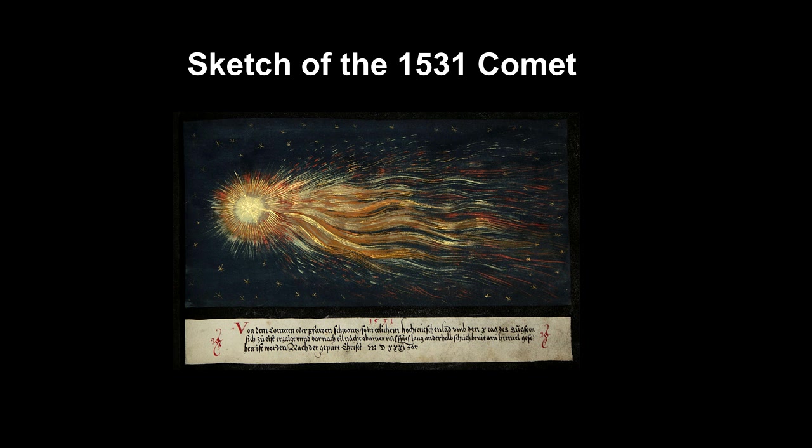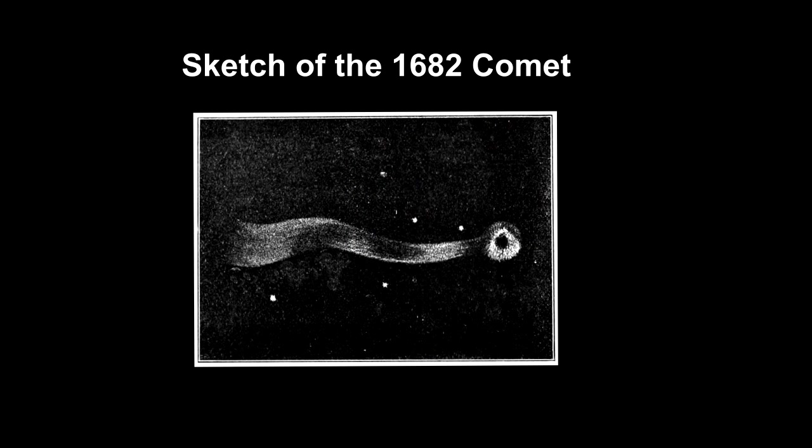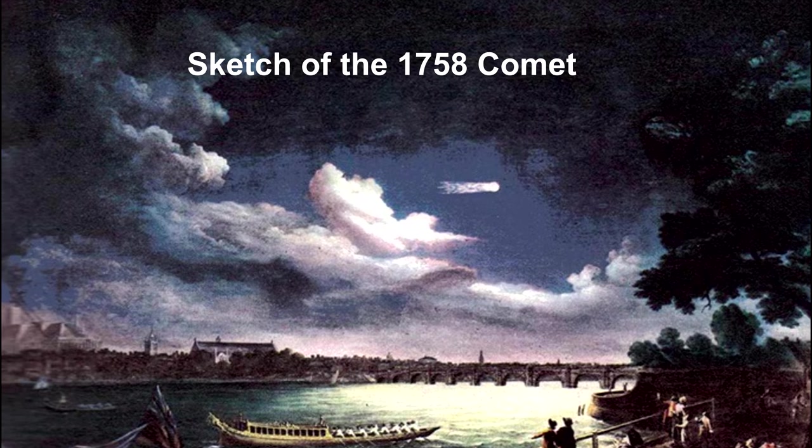In 1705, Halley studied the recorded paths of the comets of 1531, 1607, and 1682. He proposed that they were all reappearances of the same comet and that it would be back again in 1758. It was.